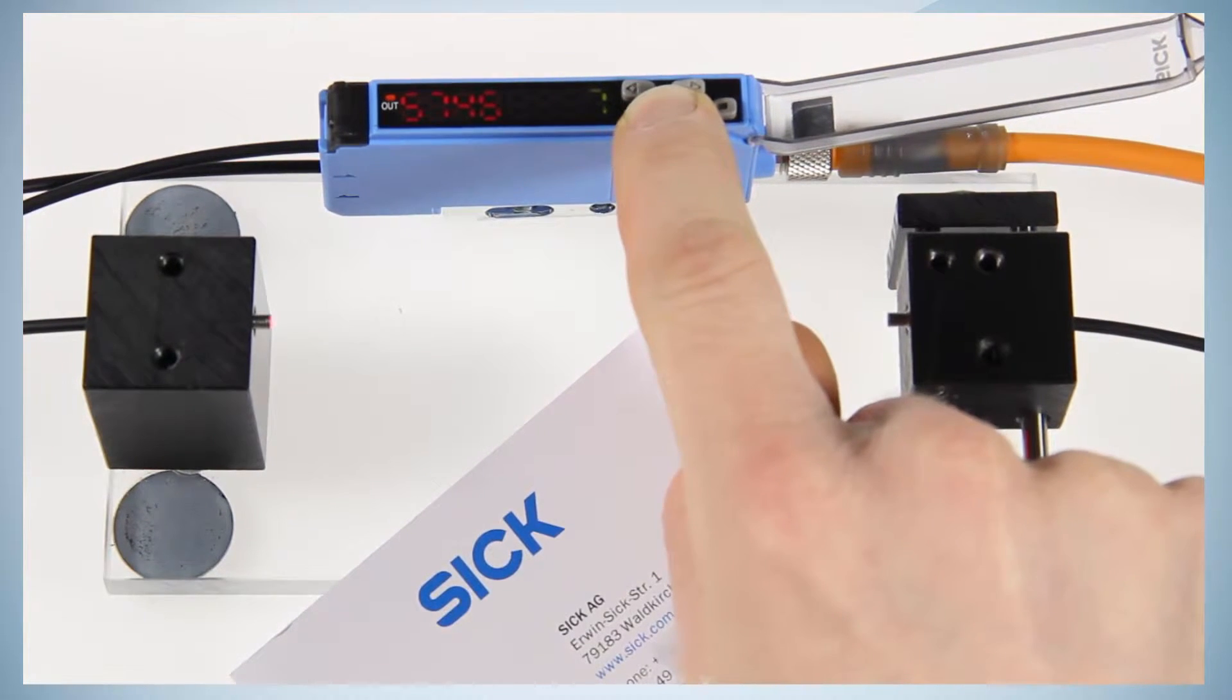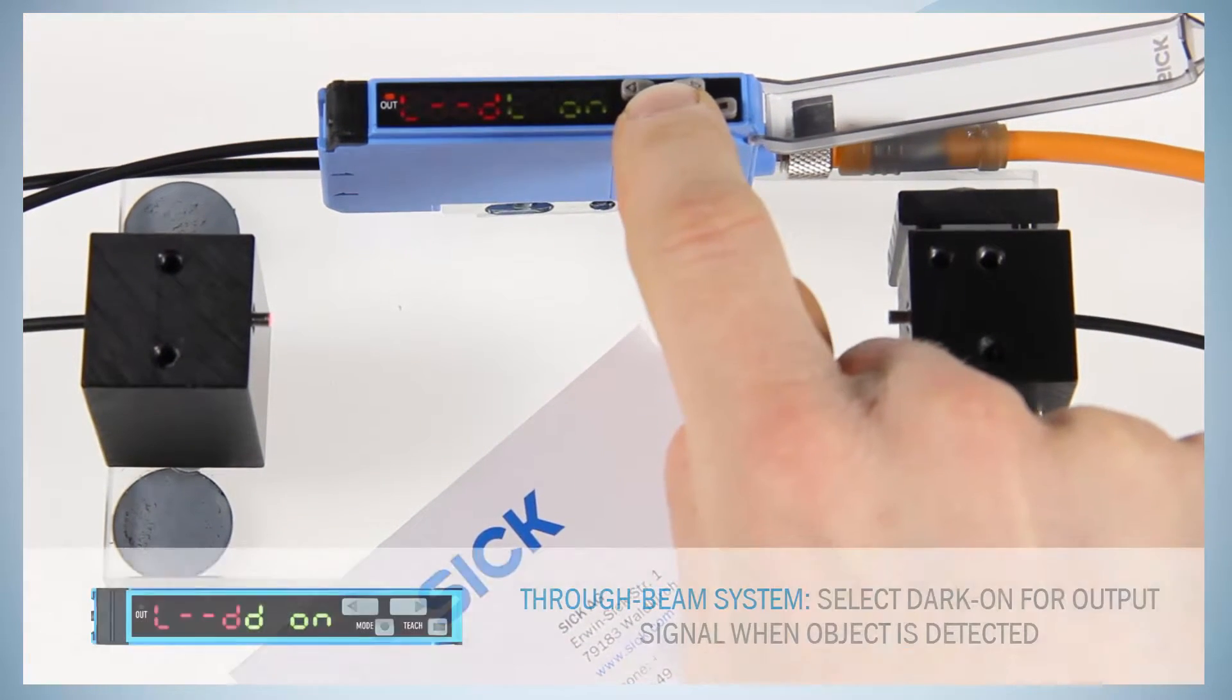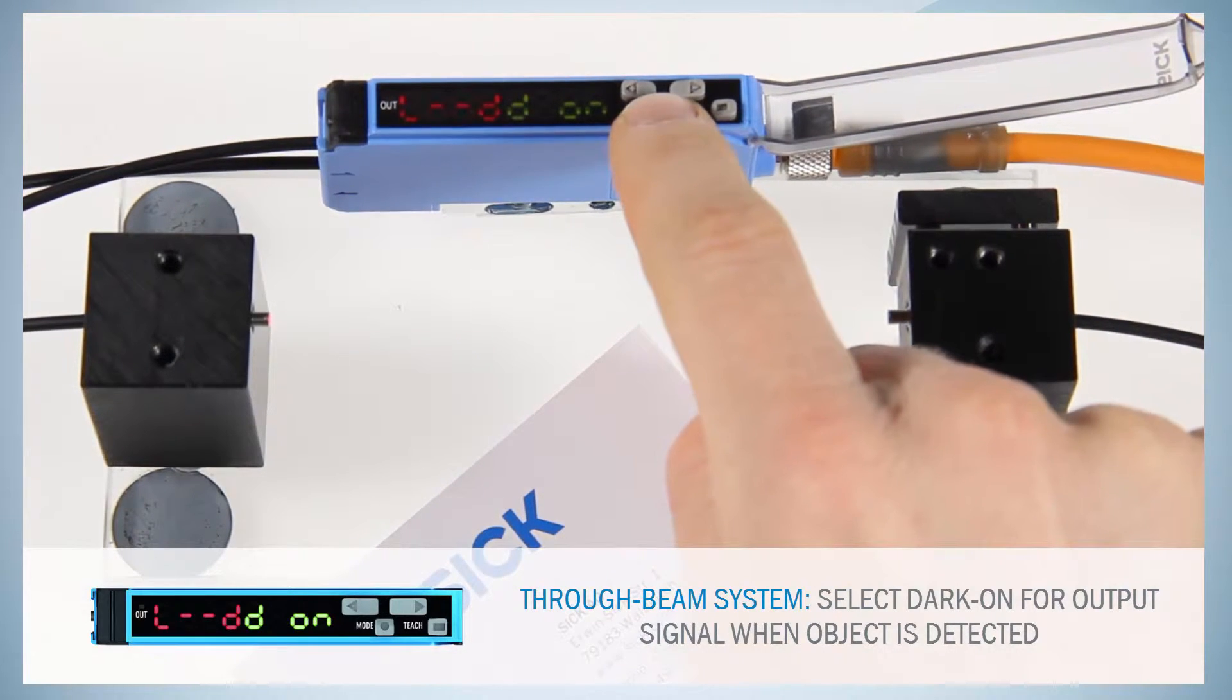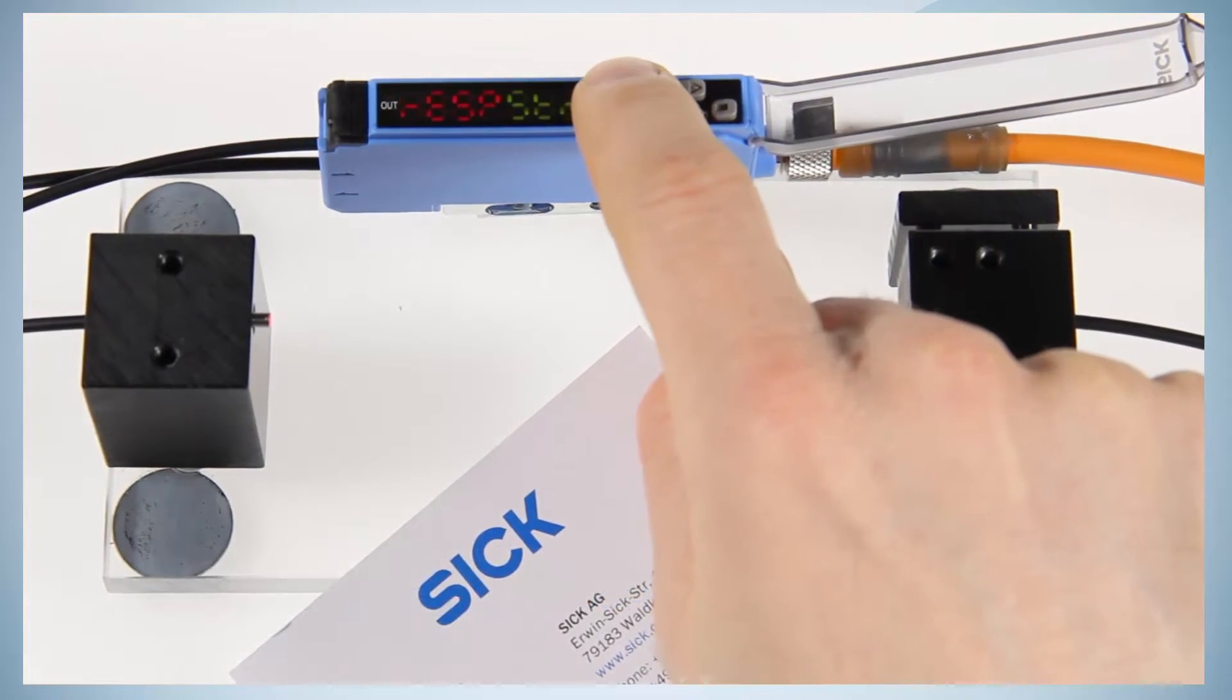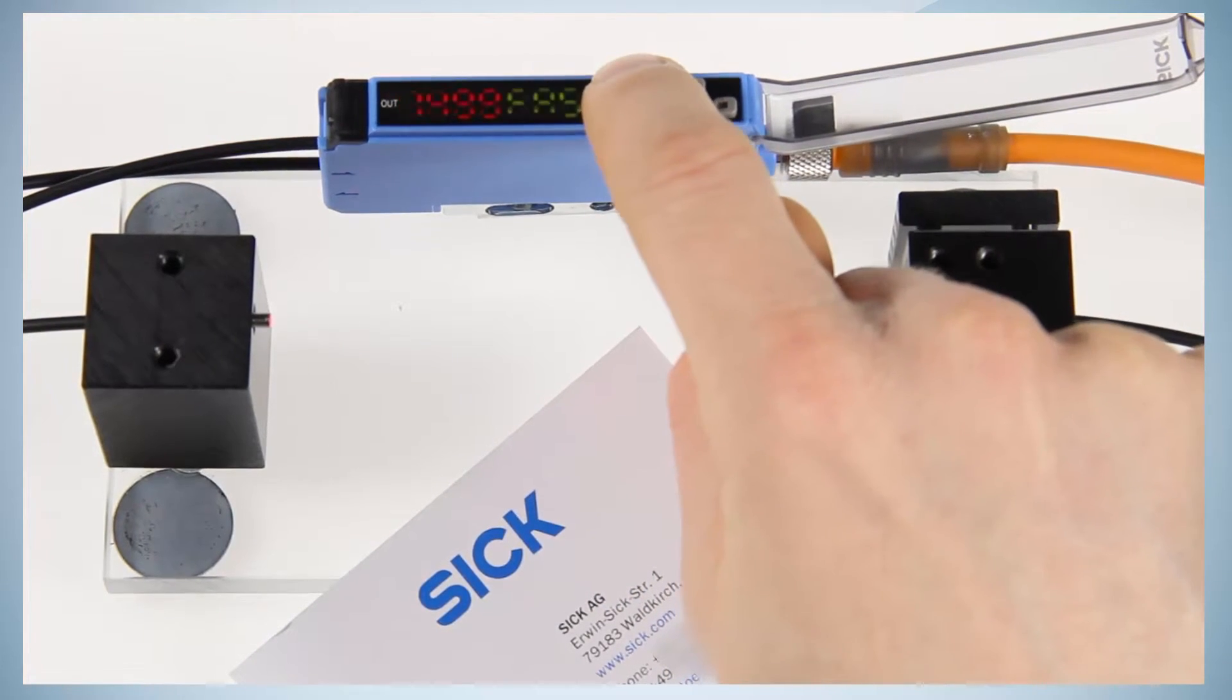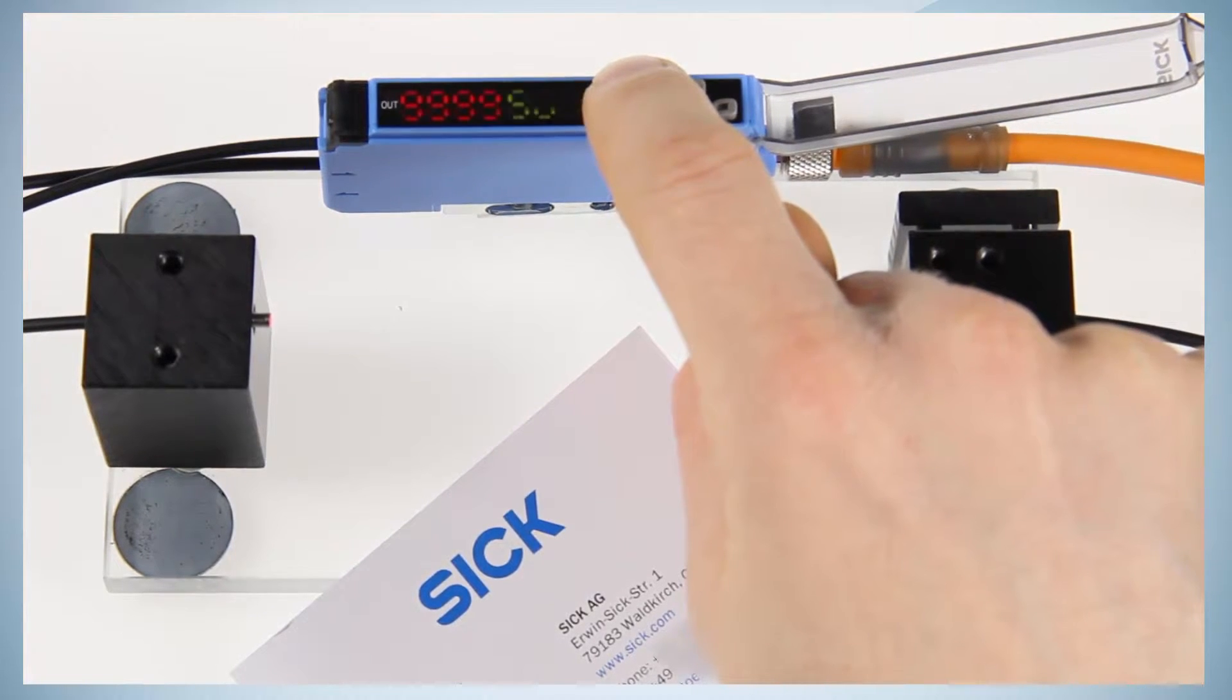Hold the mode button for 2 seconds to enter the menu and select the dark on switching mode. Use the plus or minus button to go to the menu item response time. Enter the submenu by pushing the mode button again.